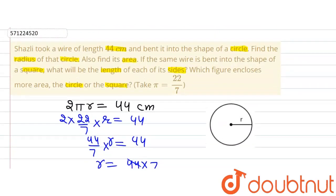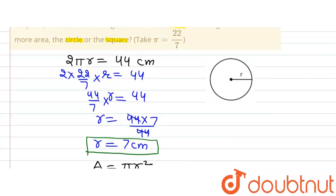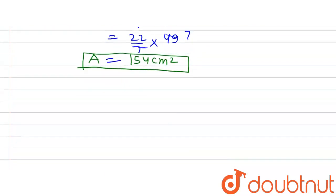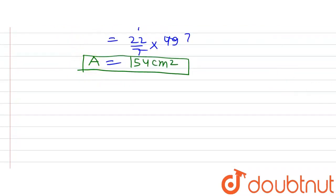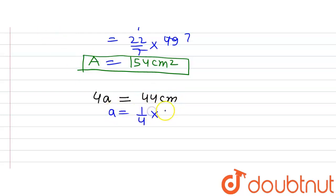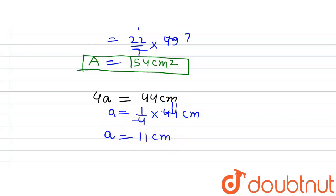Now let's move to the second part of the question. The same wire has been bent to form a square, and we are supposed to find out the side of the square. Because the wire forms the square, the perimeter of the square, which is 4 × a (where a is the side), equals the length of the wire, 44 cm. Solving: a = 44/4 = 11 cm. This is the side of the square formed.